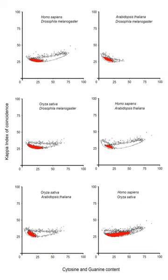A subgenomic promoter is a promoter added to a virus for a specific heterologous gene, resulting in the formation of mRNA for that gene alone. Many positive-sense RNA viruses produce these subgenomic mRNAs as one of the common infection techniques and generally transcribe late viral genes. Subgenomic promoters range from 24 nucleotides to over 100 nucleotides and are usually found upstream of the transcription start.